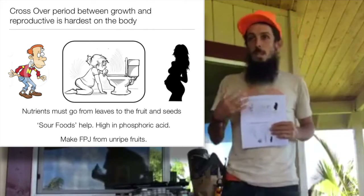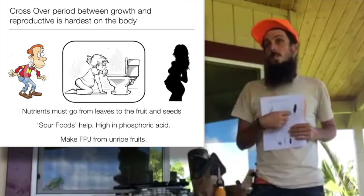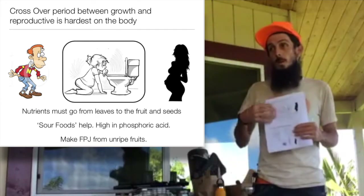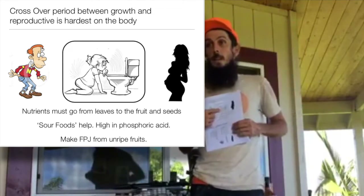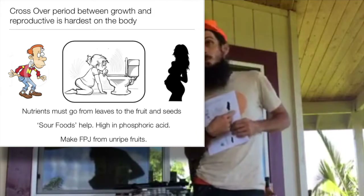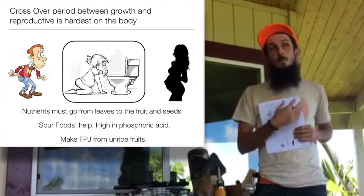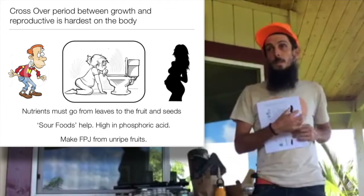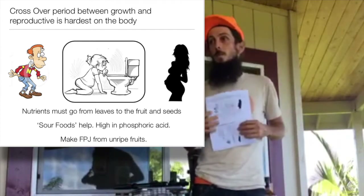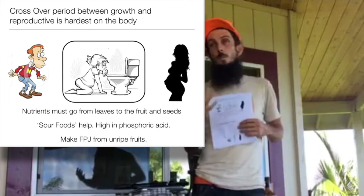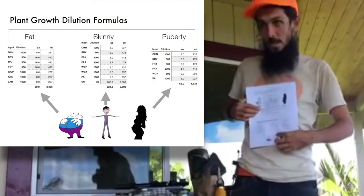Then once we're getting over to this middle side, we have a changeover formula — a puberty formula — that really focuses on phosphoric acid and sour foods. And then as you're getting over to the fruiting side, that stage is predominantly calcium-based: calcium and phosphates and phosphorus. So that's the main difference between the formulas. There are three basic formulas: fat, skinny, and puberty.